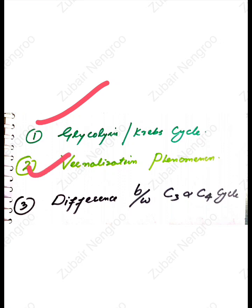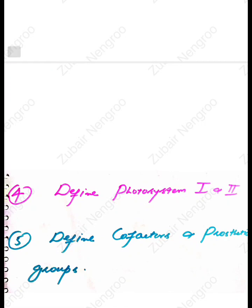After that, the third question is the difference between C3 and C4 cycle — what are the differences between the C3 and C4 cycles? The question could also come as: define C3 and C4 cycle. It can come in different forms, but you can handle it.